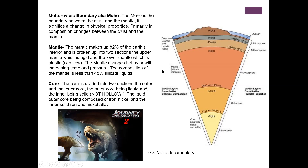The composition of the mantle is less than 45 percent silicate minerals. Then we have the core, which is divided into two sections: the outer core, which is liquid, and the inner core, which is solid — not hollow as depicted in science fiction. The liquid outer core is composed of iron and nickel, and the inner solid core is an iron and nickel alloy.